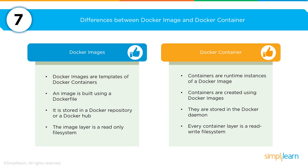What are the differences between Docker images and Docker containers? Docker images are templates of a Docker container. An image is built using a Dockerfile, stored in a Docker repository or Docker Hub, and the image layer is a read-only file system. The Docker container is a collection of runtime instances of a Docker image. Containers are created using Docker images, stored in the Docker daemon, and every container layer is a read-write file system — so you can't replace the information, you can only append to it.